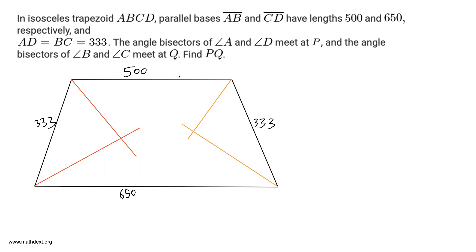In isosceles trapezoid ABCD, parallel bases AB and CD have lengths 500 and 650 respectively, and AD equals BC equals 333. The angle bisectors of angle A and angle D meet at P, and the angle bisectors of angle B and angle C meet at Q. Find PQ. We have an isosceles trapezoid ABCD, so I'm going to label my vertices such that AB is 500, CD is 650, and AD equals BC equals 333.